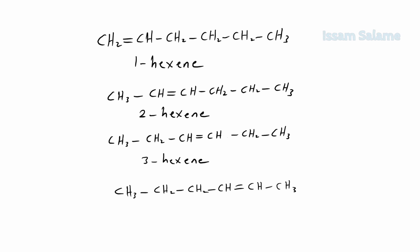Can we have the double bond at the fourth carbon? No, it's not possible, because we're going to start numbering from the right side and then it's going to be called 2-hexene, and this is not a new isomer because we already have that name with another structure.